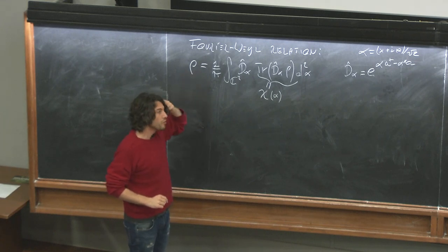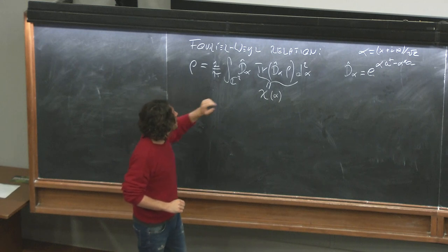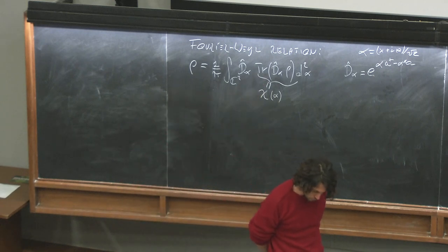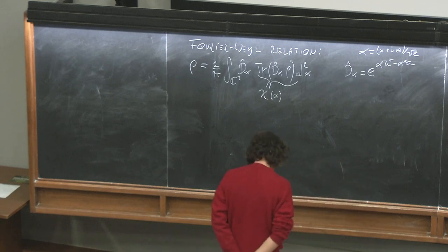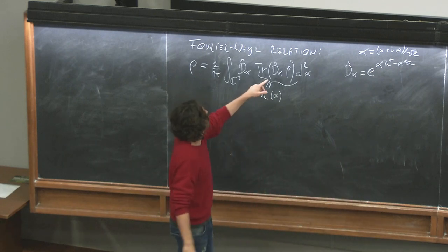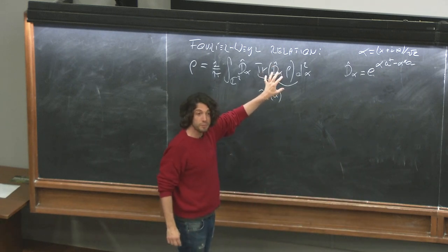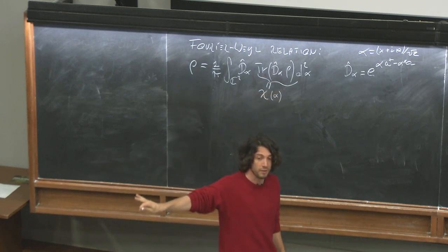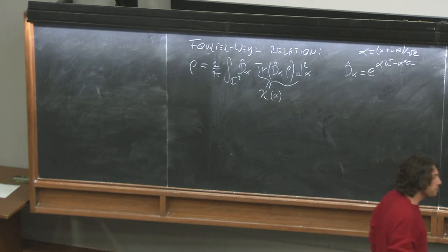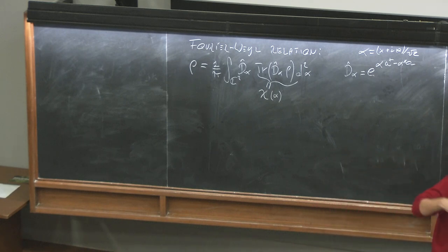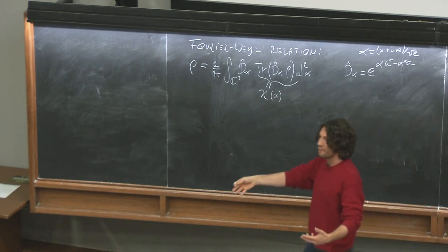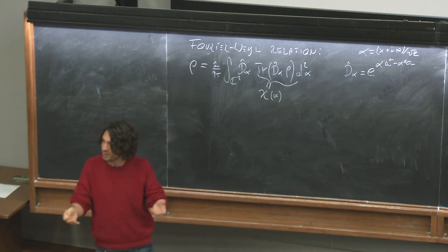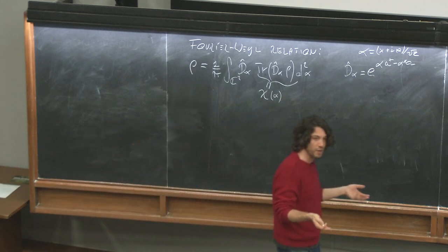If we Fourier transform this — take the complex Fourier transform — we get the Wigner function. We already talked about that. As you know, there are a number of quasi-probability functions, these phase-space representations. Another one is the P function.